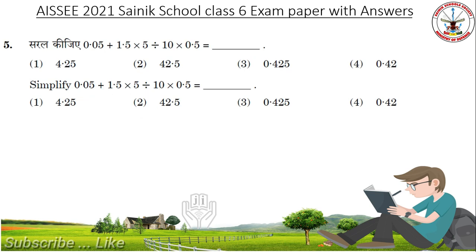Simplify 0.05 plus 1.5 into 5 divided by 10 into 0.5. Pause the video and check the calculations. Answer: 0.425.